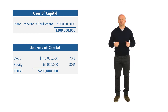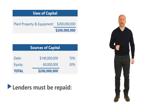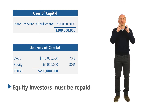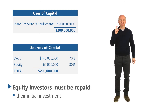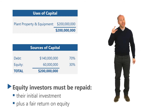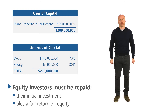Over the life of that project, or over the term of the loan, lenders need to be repaid their principal — the full $140 million borrowed — plus interest on that principal. The equity investor must also be repaid its full return of capital: that initial $60 million needs to come back, and on top of that, the equity investor needs to receive a fair return on its equity, which will be higher than the interest rate a typical lender would charge.